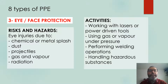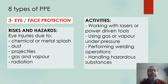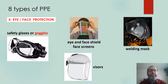The third type is eye and face protection. The eyes are very susceptible to harm by different objects and situations. Risks are related to chemical or metal splash, dust, projectiles, gas and vapor, or radiation. Activities that can require this type of PPE are working with lasers and power-driven tools, using gas or vapor under pressure, which can be a very dangerous activity, performing welding operations, or handling hazardous substances in general. Examples include safety glasses or goggles, eye and face shields, face screens, visors, or welding masks.